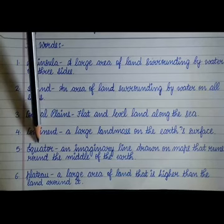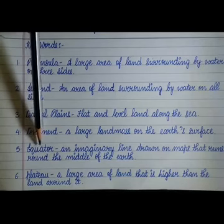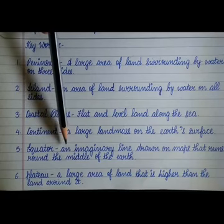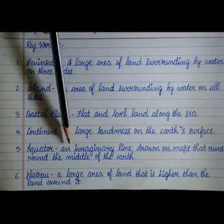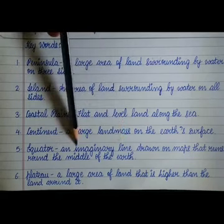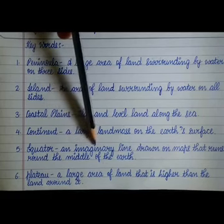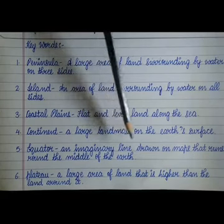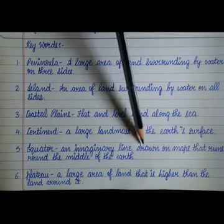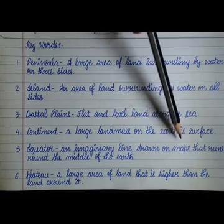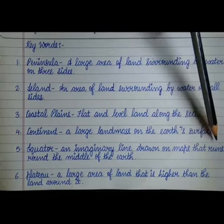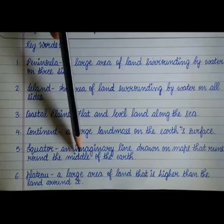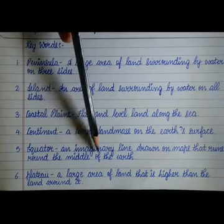Fifth keyword: Equator. E-Q-U-A-T-O-R. Equator. An imaginary line — I-M-A-G-I-N-A-R-Y — drawn on maps that runs round the middle of the earth.